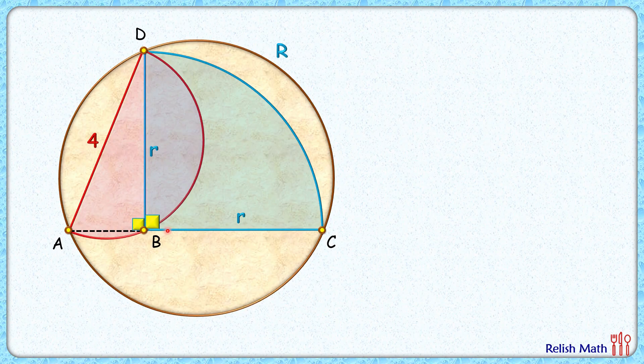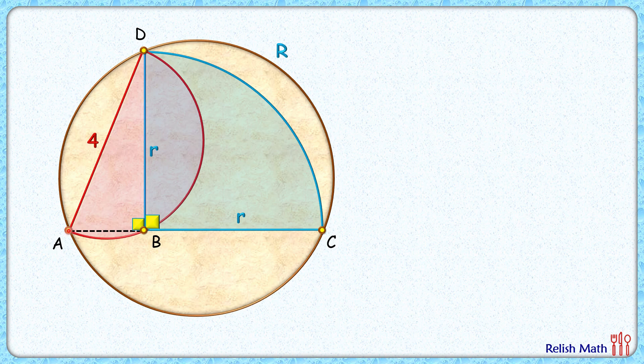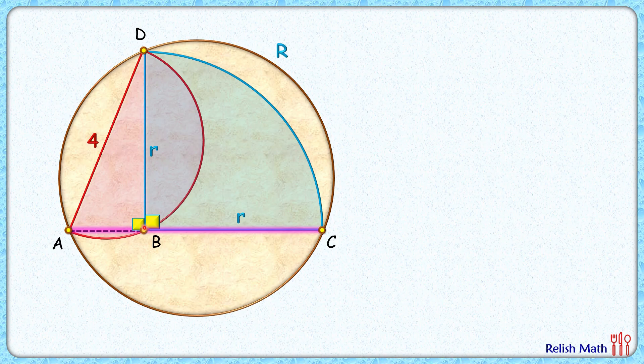As the angle sum at point B is 180, we can say ABC is a straight line. Also, let's extend DB to meet at the circumference at point E.